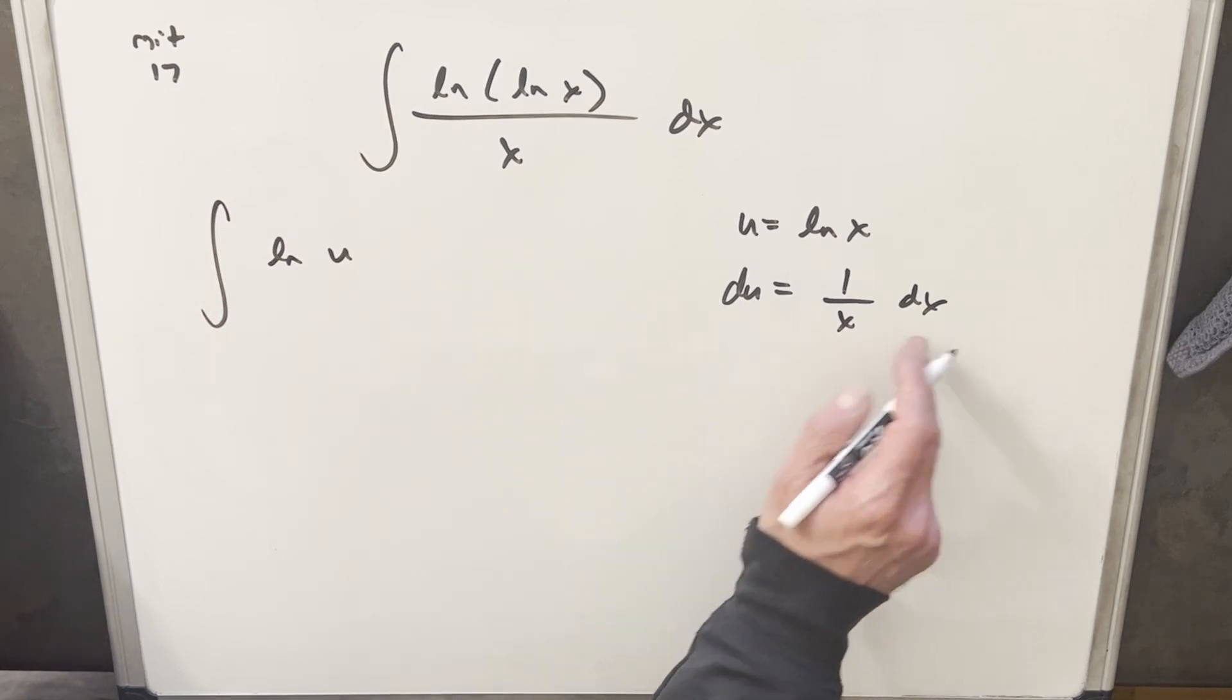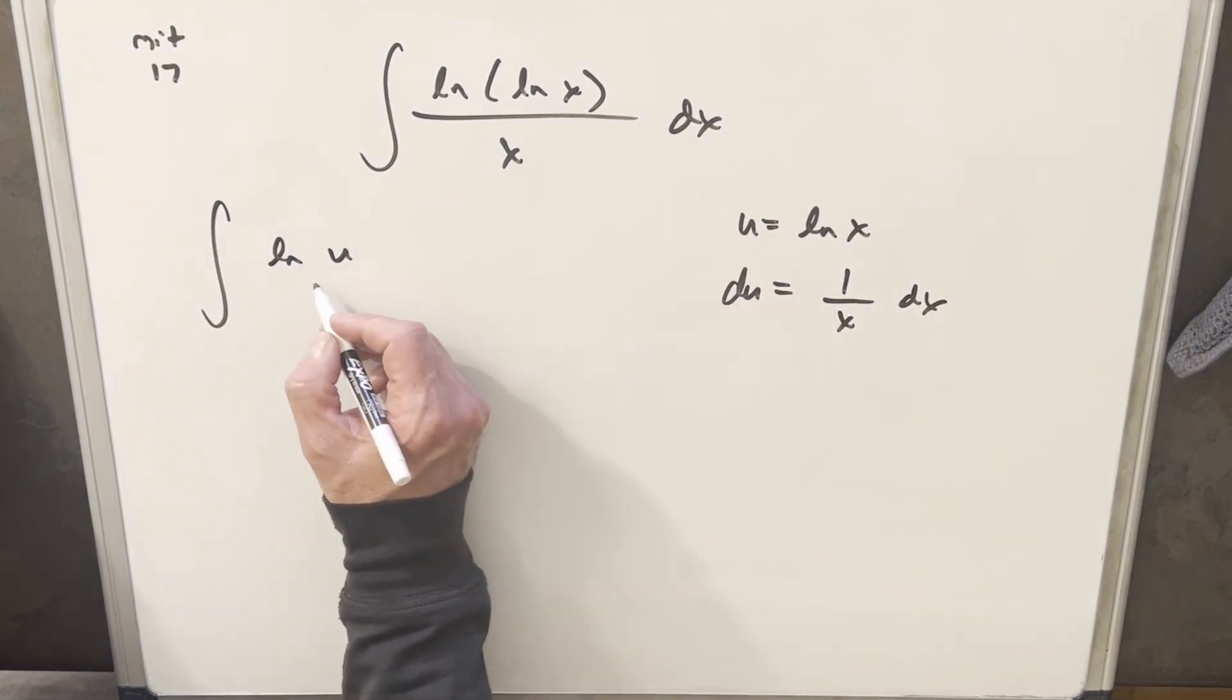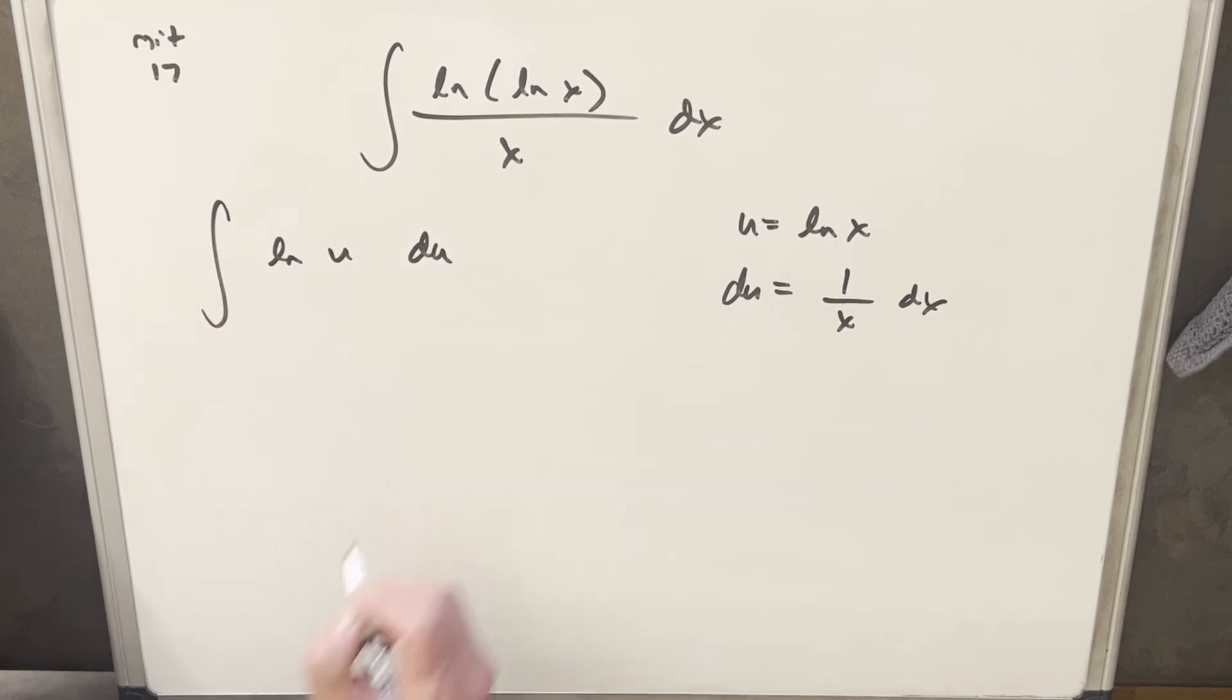Now notice our 1 over x dx is what we have right here. So this is actually just du, so it simplifies down to just natural log.